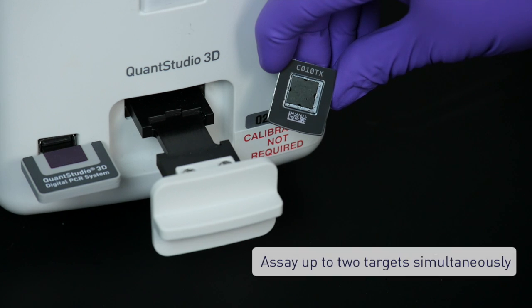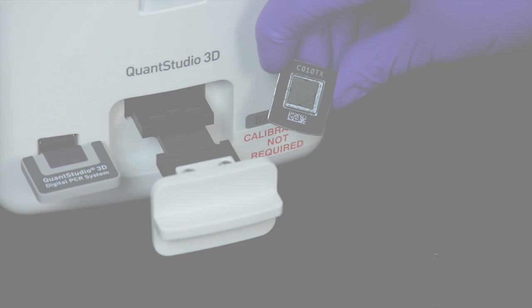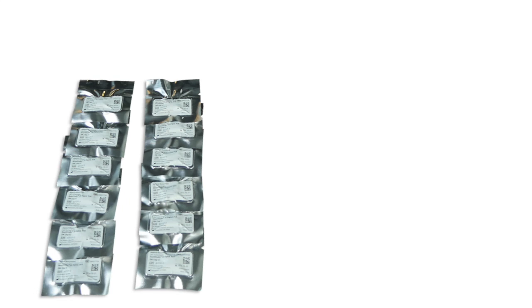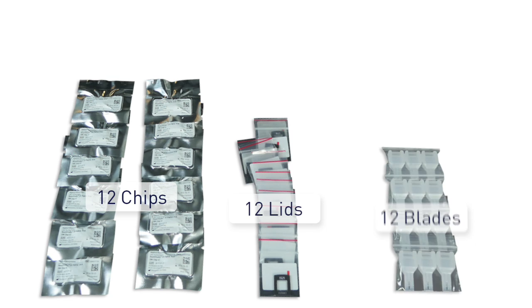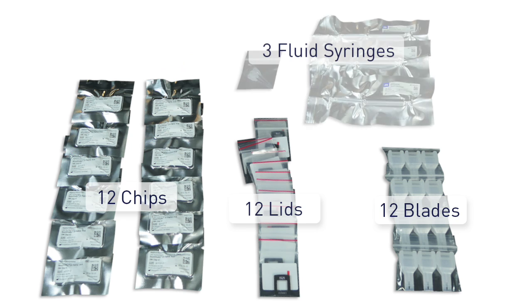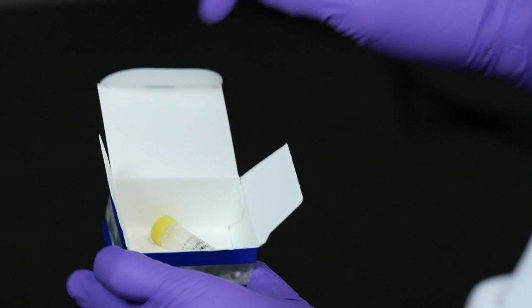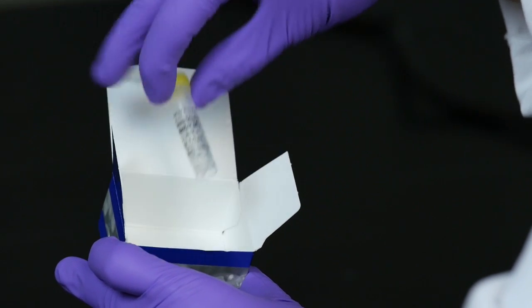Each chip runs one sample, and you can assay up to two targets simultaneously. Your QuantStudio 3D chip kit includes 12 chips and lids, 12 loading blades, and 3 immersion fluid syringes with tips. You will also need the QuantStudio 3D Digital PCR Master Mix.